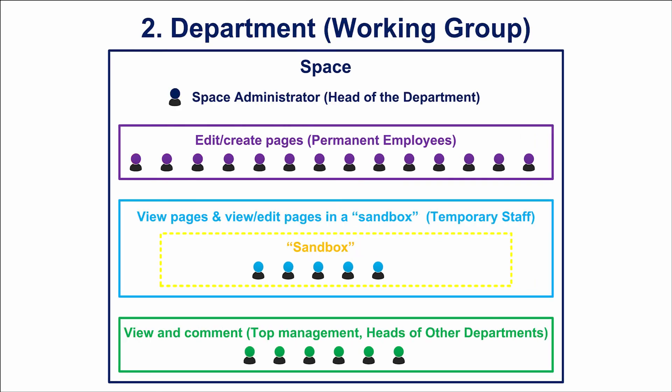The second typical use case is a department or working group. The space contains all information required for the work of some department or group. Technically the setup is similar to the previous one: the head of the department is the space administrator and all permanent employees have permissions to create and edit content. However, there is another category of employees with limited access – those on probation, newbies, or temporary staff. Such people have no permission to edit all pages, but there is a separate sandbox in the space where they can edit pages, keep records, and mark their progress using a special branch with child pages. Top management and heads of other departments can comment on everything in the space.